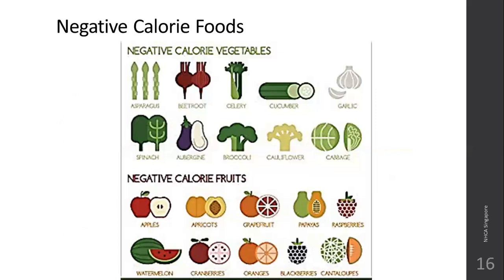Negative calories: negative calorie fruits and vegetables have calories, but when you consume and digest them, the body uses more calories to digest them than the calories they bring into your body — that is why they are called negative calories. Some negative calorie vegetables are asparagus, beetroot, celery, cucumber, garlic, spinach, brinjal, broccoli, cauliflower, and cabbage. Negative calorie fruits include apples, grapefruit, papayas, raspberries, watermelon, cranberries, oranges, blackberries, and cantaloupe. So you lose weight with these kinds of fruits and vegetables.